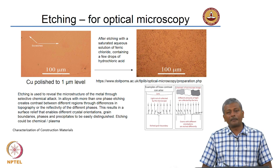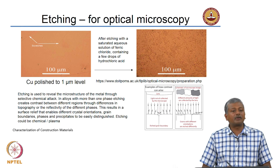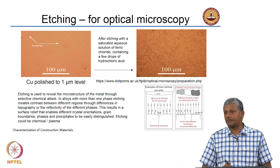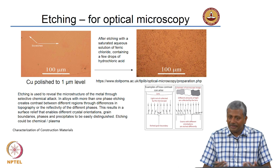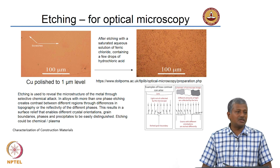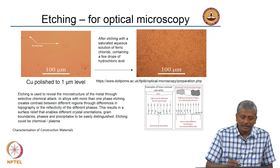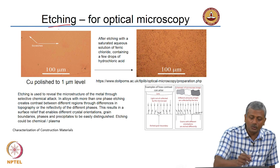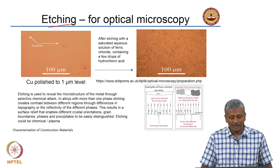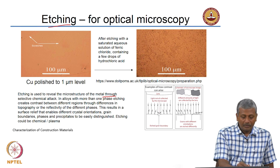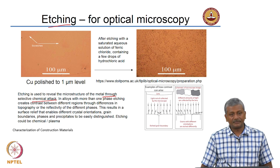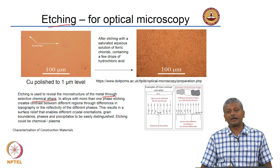In some cases when you do optical microscopy, you may not get sufficient contrast simply through polishing and sample preparation. You may need to do something beyond polishing to reveal the contrast that exists between the grains of the material. This process of revealing contrast by chemical attack is known as etching — the revealing of the microstructure through selective chemical attack.